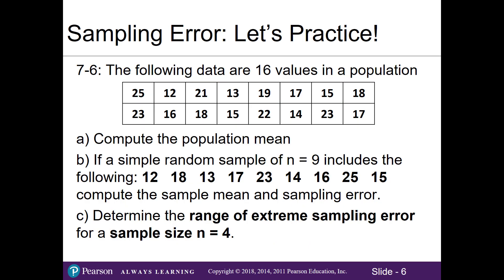Let's look at example 7-6. It's very similar to a homework problem. Make sure you have your worksheet in front of you so you can follow along. The following data are 16 values in a population. You're asked to compute the population mean, then compute the sample mean based on these data and find the sampling error, and then in Part C you're asked to find the range of extreme sampling error for a particular sample size.